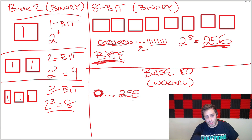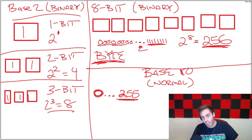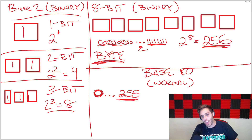This only takes 3 digits to represent in base 10, whereas in binary this would take 8 digits to represent. So it's a lot more efficient to encode and talk about these numbers in base 10 than having to write out the binary each time with these really big numbers.